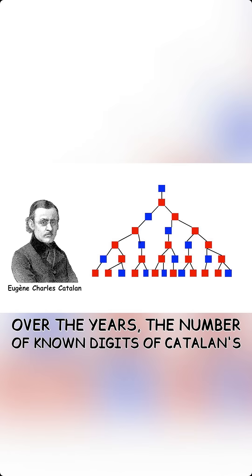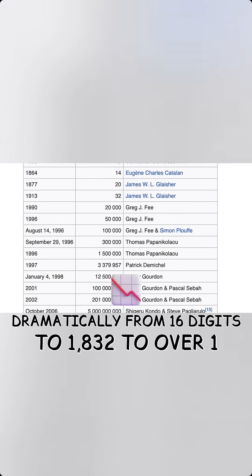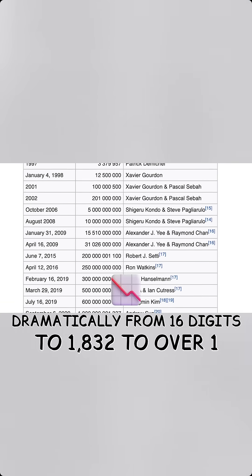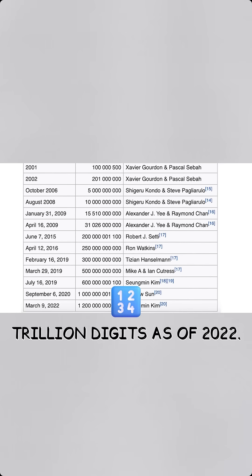Over the years, the number of known digits of Catalan's constant has increased dramatically from 16 digits in 1832 to over 1 trillion digits as of 2022.